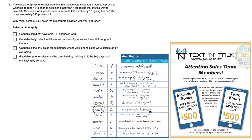Choice B: Gabrielle likely did not sell the same number of phones each month throughout the year. Other salespeople might complain that it's not fair to just take the average. April could be a slow month compared to December, where people are shopping for Christmas. Other faster months could bring up the average. This is definitely a valid point, so Choice B applies.